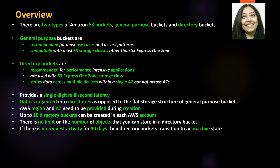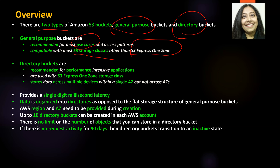In Amazon S3 we have two types of buckets. First is a general purpose bucket, and second is directory buckets. General purpose buckets are the regular buckets that you have been creating all along. They are recommended for most use cases and are compatible with most S3 storage classes, other than S3 Express One Zone.